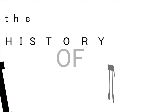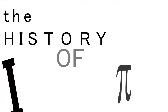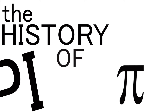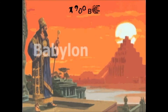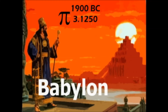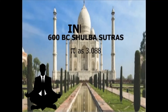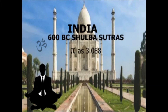The earliest writing approximations of pi are found in Egypt and Babylon, both within 1% of the true value. In Babylon, a clay tablet dated 1900 BC has a geometric statement that, by implication, treats pi as 3.125. In India, around 100 BC, the Shulba Sutra treats pi as approximately 3.088.